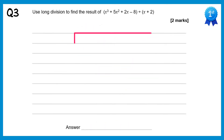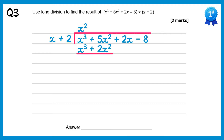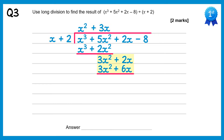For this one we draw a bus stop, the cubic inside and the linear term at the front. Start with x cubed divided by x which is x squared, then multiply back through: x squared times x is x cubed, x squared times 2 is plus 2x squared. Now subtract: x cubed take x cubed is 0 and 5x squared take 2x squared is 3x squared. Bring down the next term, the plus 2x, and do 3x squared divided by x which is plus 3x. Multiply 3x back through: 3x times x is 3x squared, 3x times 2 is plus 6x. Subtract: 3x squared take 3x squared is 0 and 2x take 6x is negative 4x.